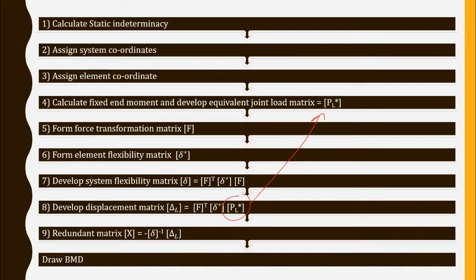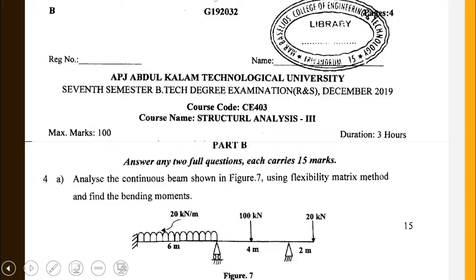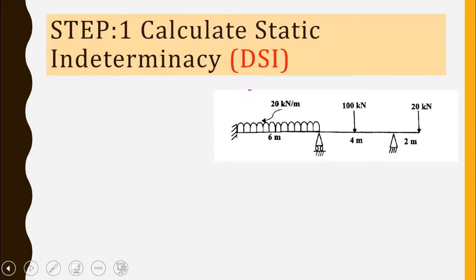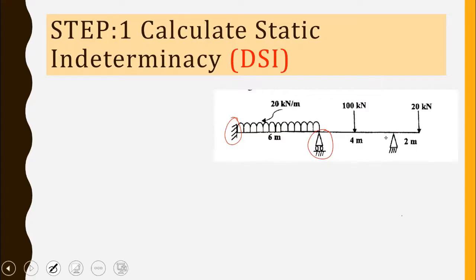Then we will calculate the redundant matrix, which will give us the bending moments at the system coordinates. So let us see how to analyze this given beam going through all these steps. The first step is to calculate static indeterminacy. Looking at this beam, we have a fixed end, a roller, and a hinged end.